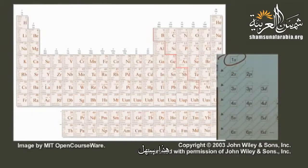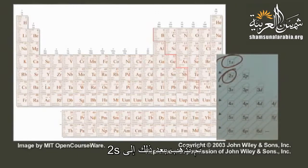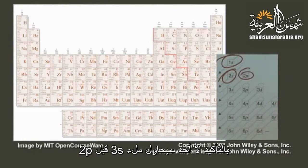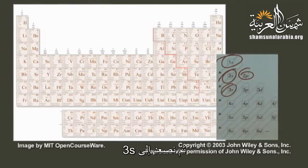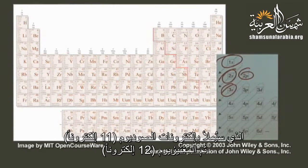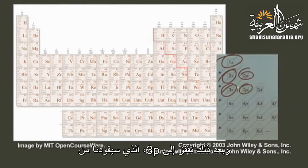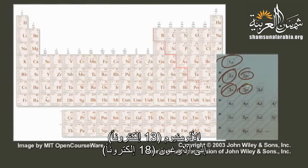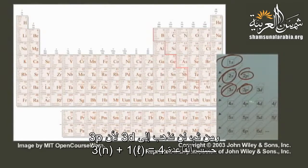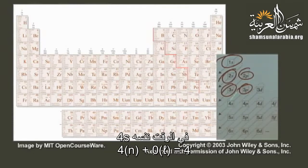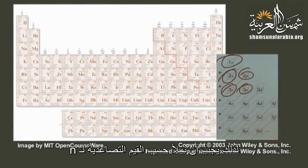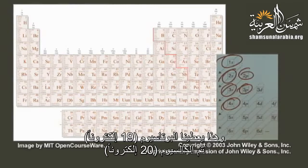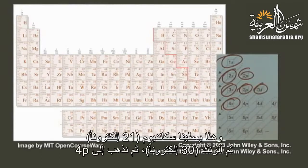Starting with 1s — hydrogen and helium. Then 2s: lithium and beryllium. Then 2p, getting us to neon. Then 3s: sodium to magnesium. Then 3p: aluminum to argon. Then we don't go to 3d — because 3p gives n+l=4 and 4s gives n+l=4 as well, so we fill ascending n, going to 4s: potassium and calcium. Then 3d: scandium to zinc. Then 4p: gallium to krypton.